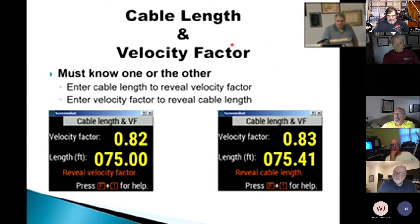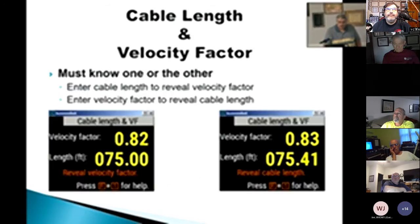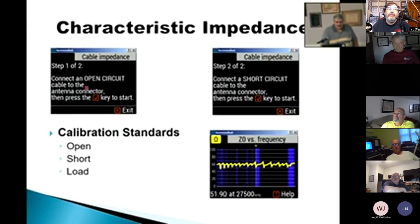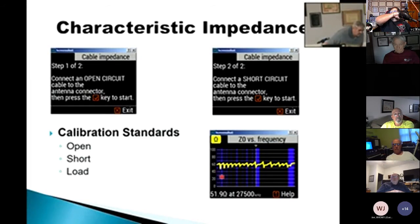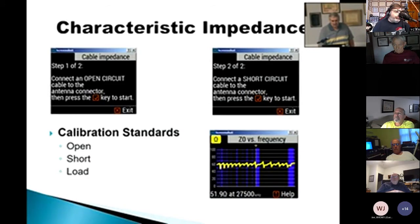Here's cable length and velocity factor — you need to know one or the other. If you know the velocity factor, you enter that in and it'll tell you the cable length. Or if you know the cable length, you put in the length and it'll tell you the velocity factor. For characteristic impedance, you also need the calibration elements. Here's a scan of that same piece of coax bouncing around about 60 ohms.